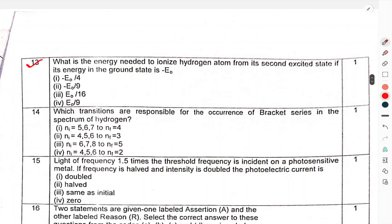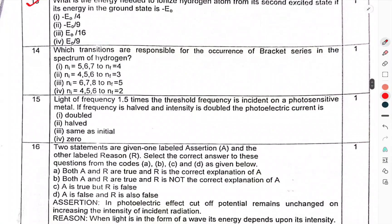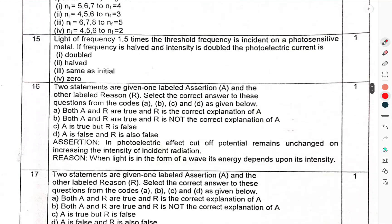Question 13: What is the energy needed to ionize a hydrogen atom from its second excited state if the energy in the ground state is minus E0? Question 14: Which transitions are responsible for the occurrence of Brackett series in the spectrum of hydrogen?